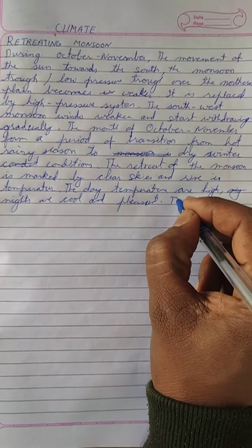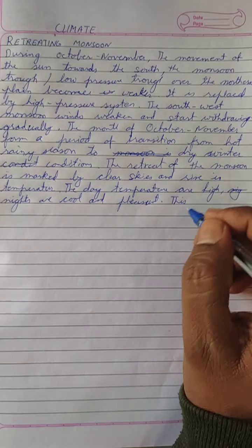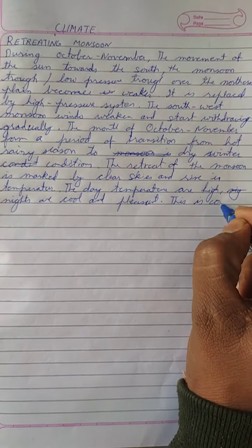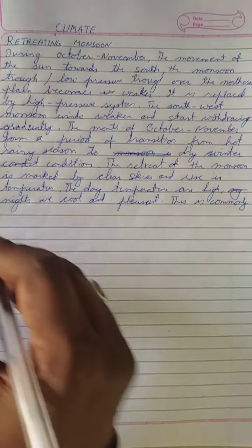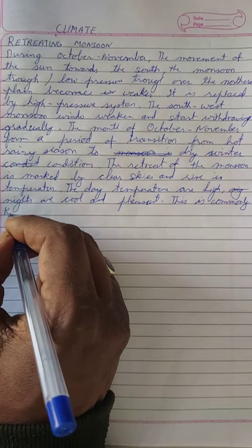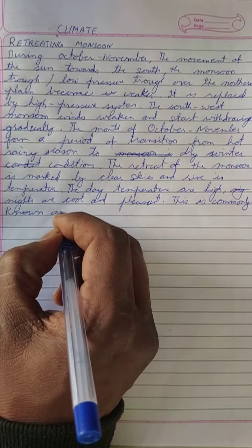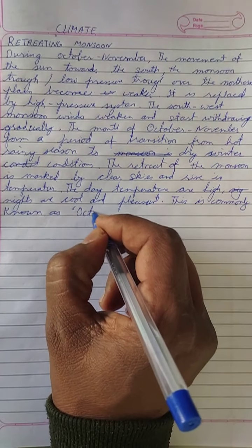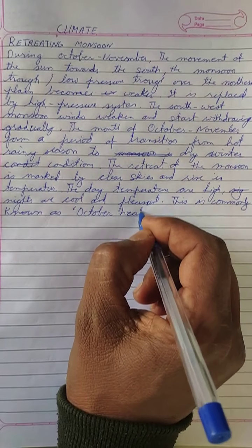Owing to these conditions of high temperature and humidity, the weather becomes rather oppressive during the day. This is commonly known as October Heat.